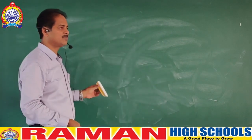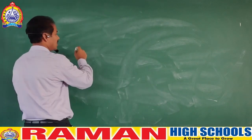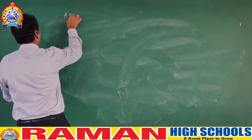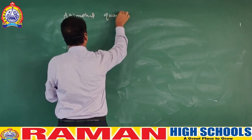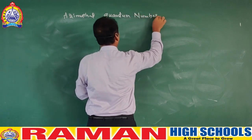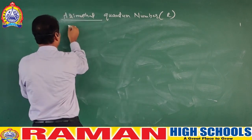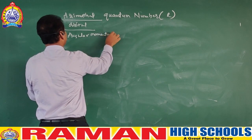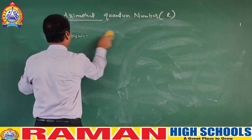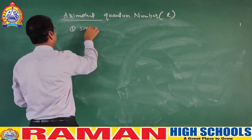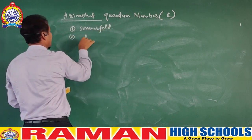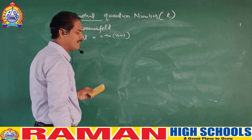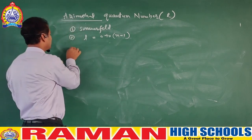Now let us go into the azimuthal quantum number. This is also called the angular momentum quantum number or the orbital quantum number. It is indicated by the letter l. l takes the values from 0 to n minus 1.